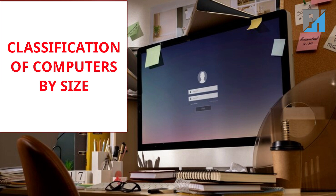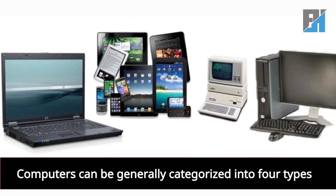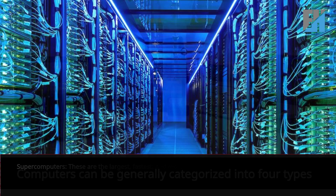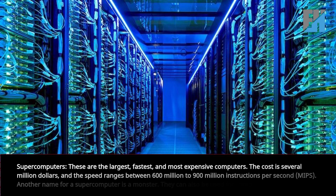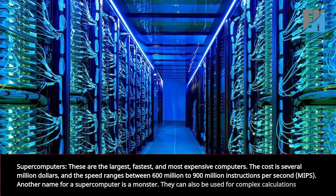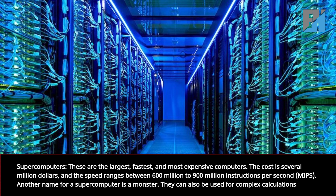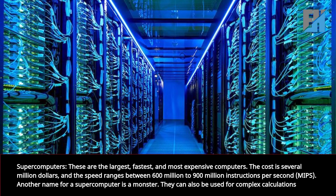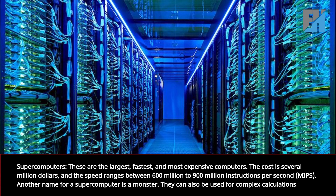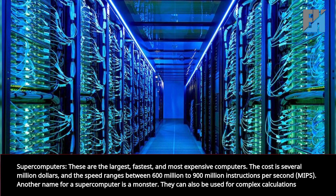This class will explore classification of computers by size. Computers can be generally categorized into four types. Supercomputers are the largest, fastest, and most expensive computers. The cost is several million dollars and the speed ranges between 600 million to 900 million instructions per second, MIPS. Another name for a supercomputer is a monster.